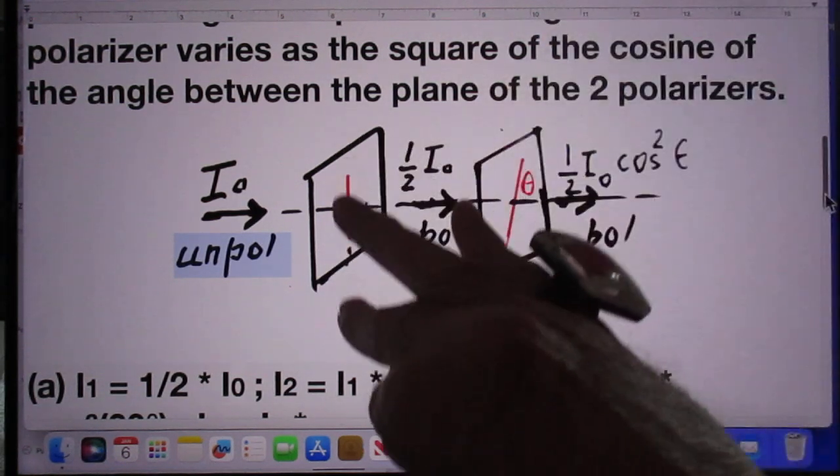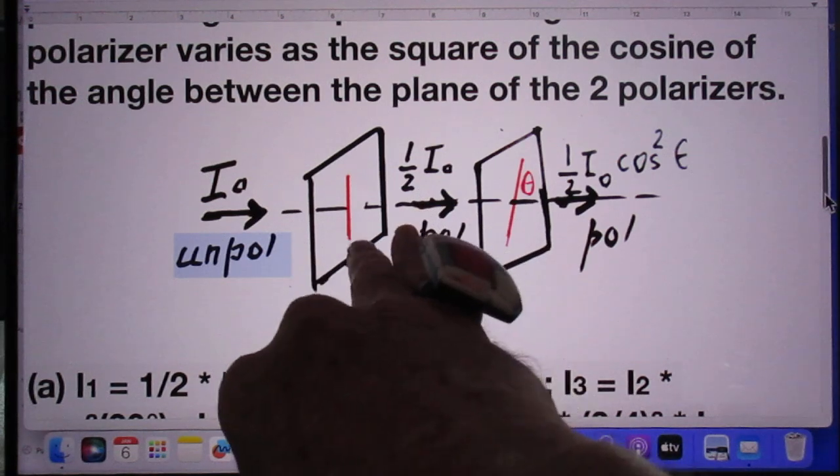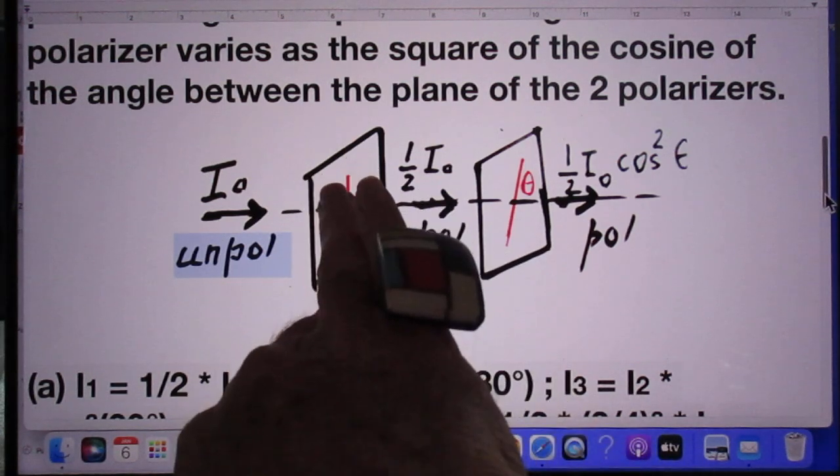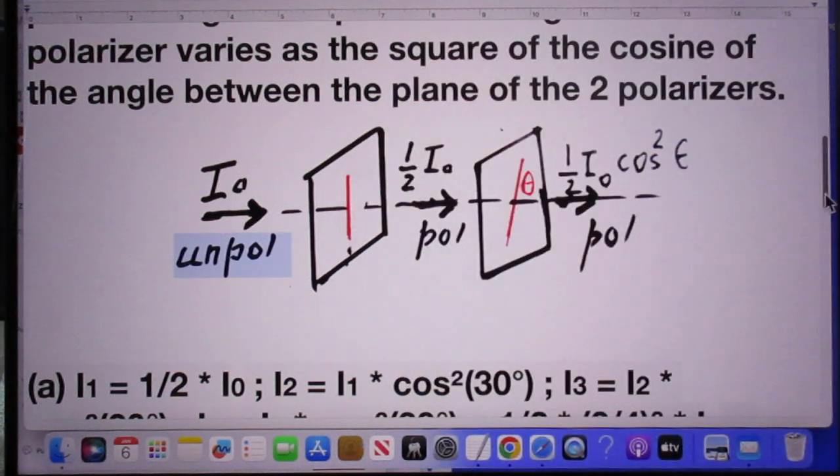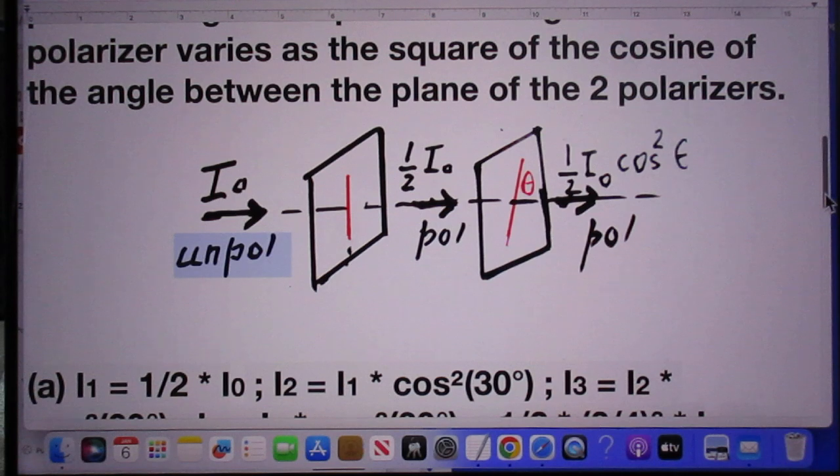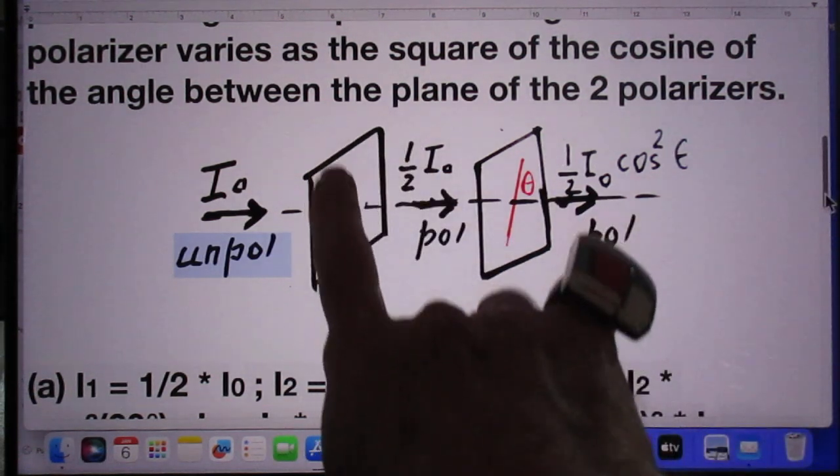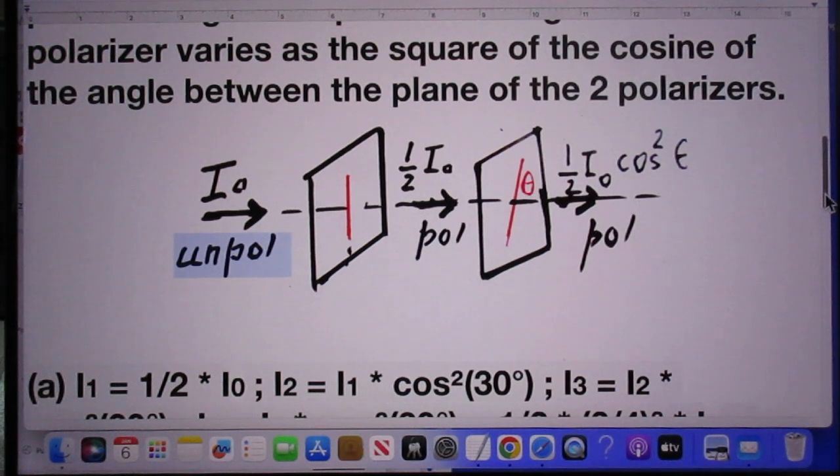It goes to a linear polarizer, which you see here. This is the direction of polarization. If it is an ideal polarizer, the light intensity that comes out is linearly polarized in this direction, and the intensity is one-half I₀.